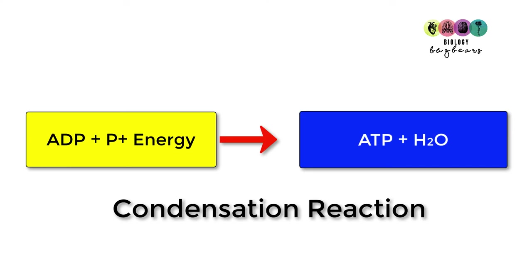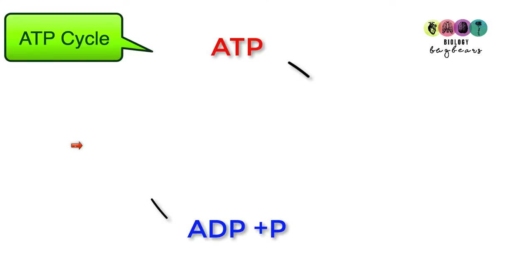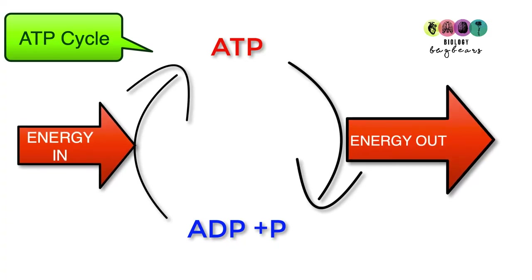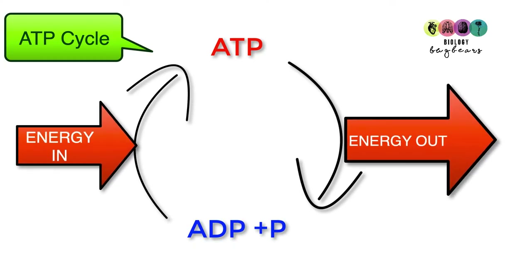The way ATP is constantly regenerated and broken down to release energy is known as the ATP cycle. You do get diagrams like this in exam questions. Know that when ATP is broken down you release energy and are left with ADP and phosphate, and to regenerate ATP you add energy in — and know the role of water as well.